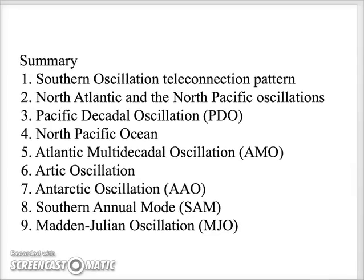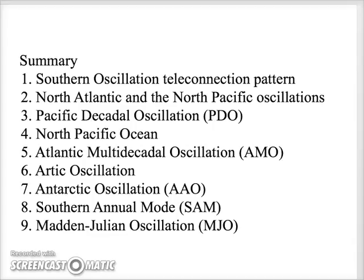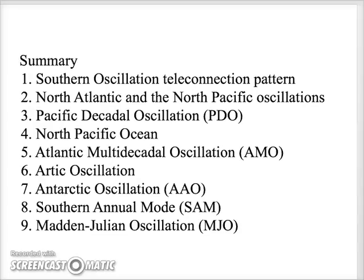With El Niño, the Pacific North America teleconnection pattern is usually in its positive mode, with a strong pressure ridge over Western North America and low pressure in the southeastern United States. This gives corresponding positive and negative temperature anomalies. The North Atlantic and North Pacific Oscillations involve the subtropical high pressure cells and subpolar lows in each ocean; high index values of either oscillation represent strong zonal westerlies.